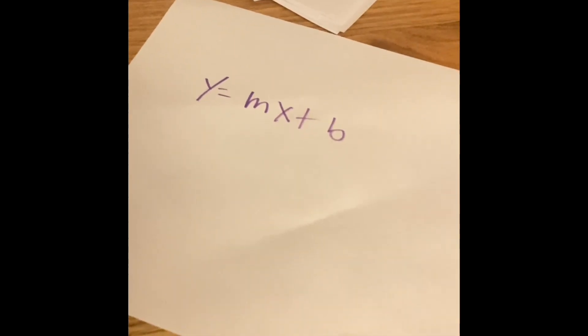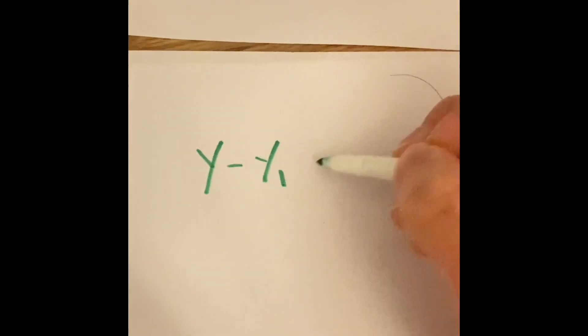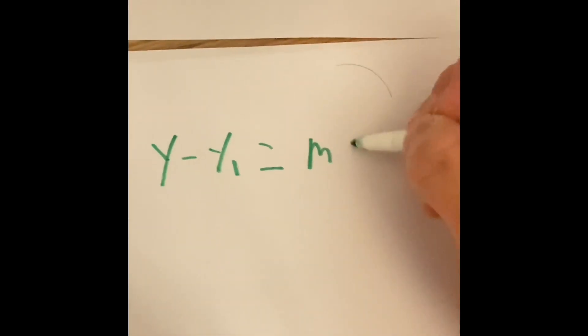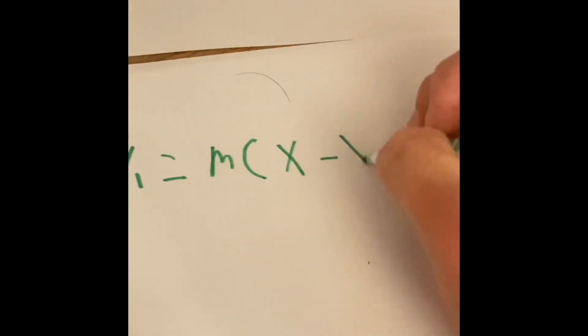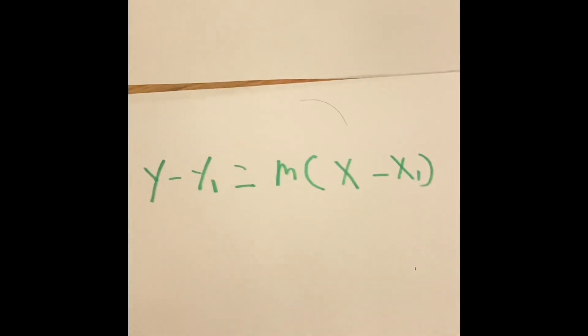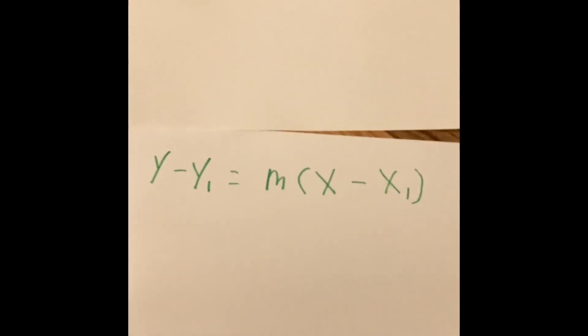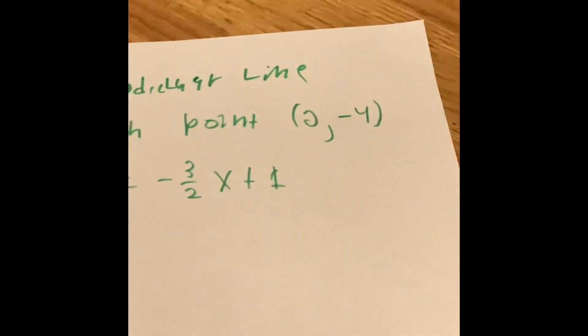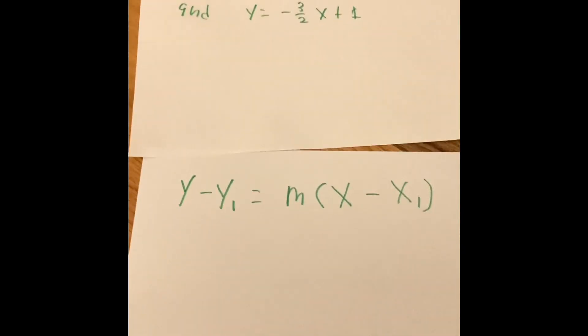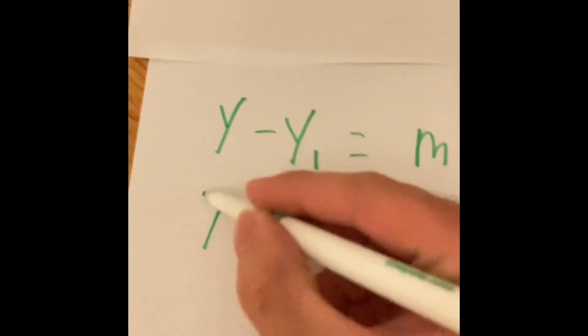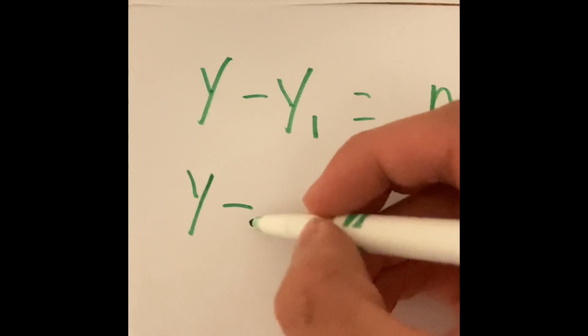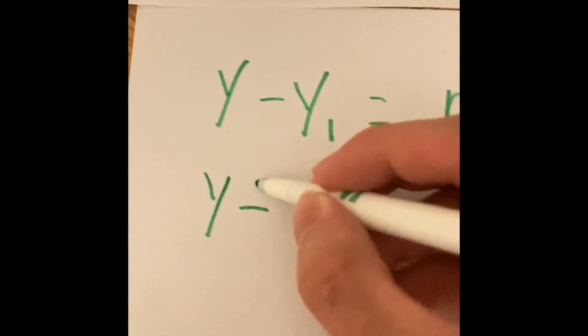What is the new y equals mx plus b equation? In order to solve this problem, we're going to use the point slope form again: y minus y1 equals our slope times x minus x1. With the point (0, -4), we put that into point slope form. We have y minus negative 4, which becomes y plus 4, equal to our slope.